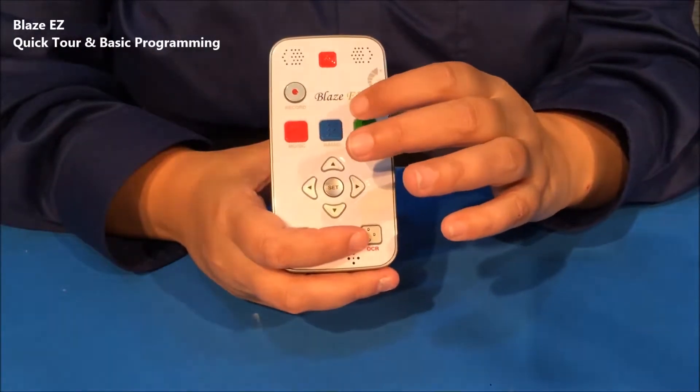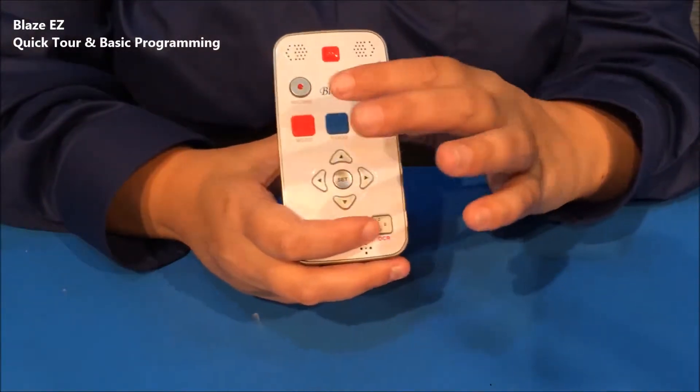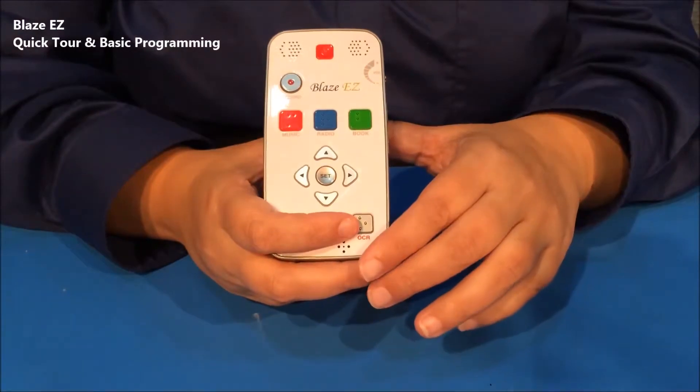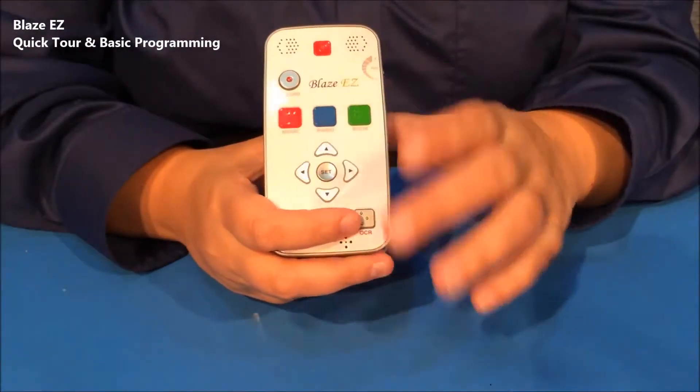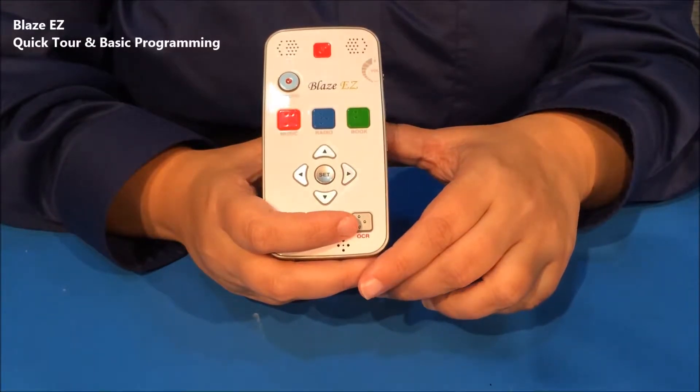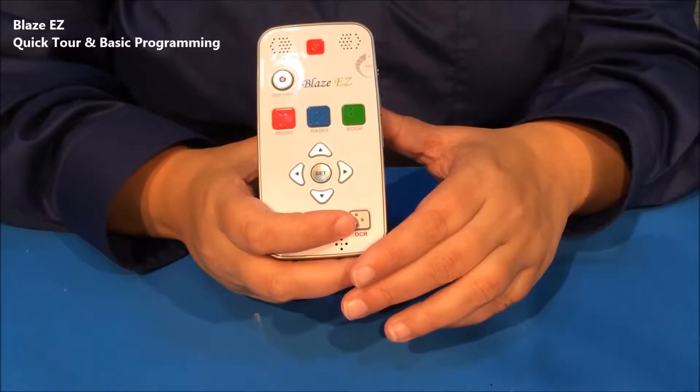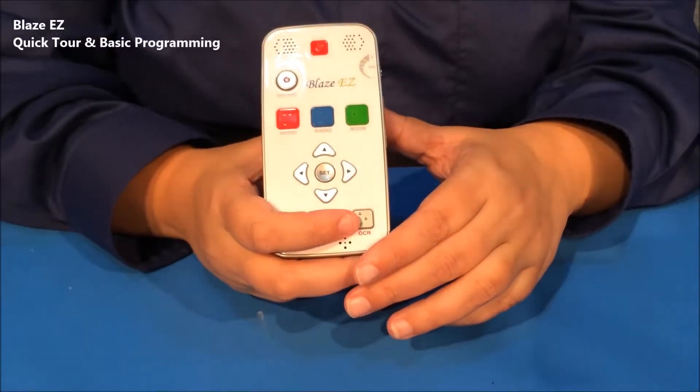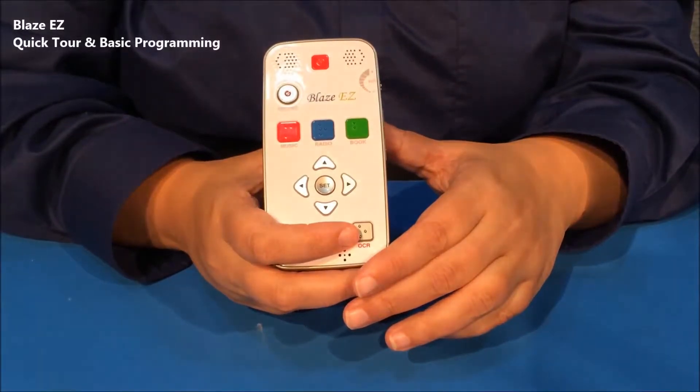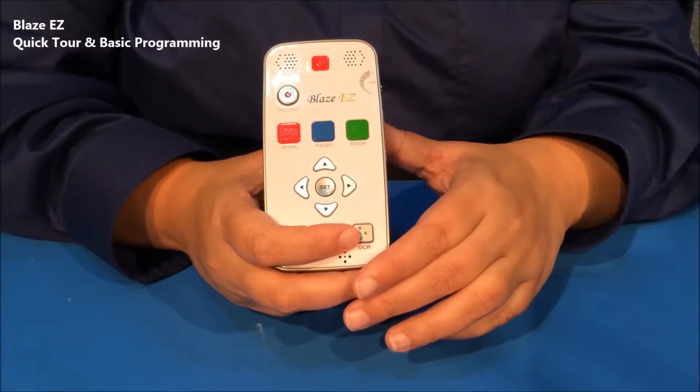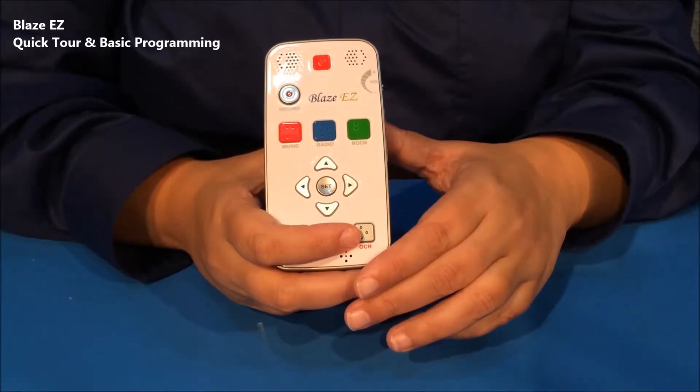Below the record button is a row of three buttons with braille labels. On the left is a button with the label M, which opens the media player. In the center is a button labeled with an R, which opens the FM radio. On the right is a button with a label B, which is labeled for the book reader. The book reader will actually play both documents and DAISY books. So you can play text files and word files in the book reader as well as DAISY content.